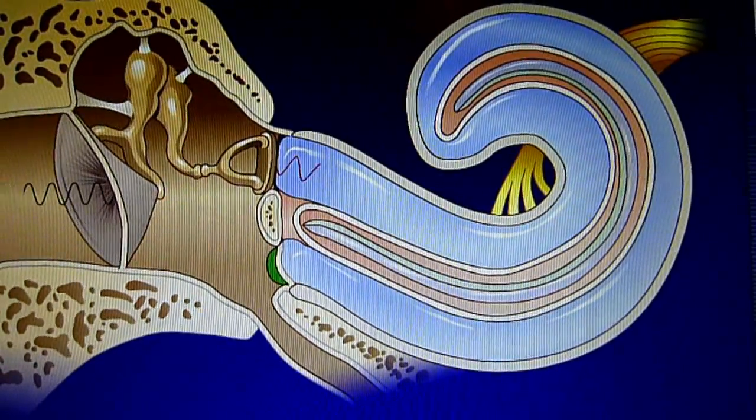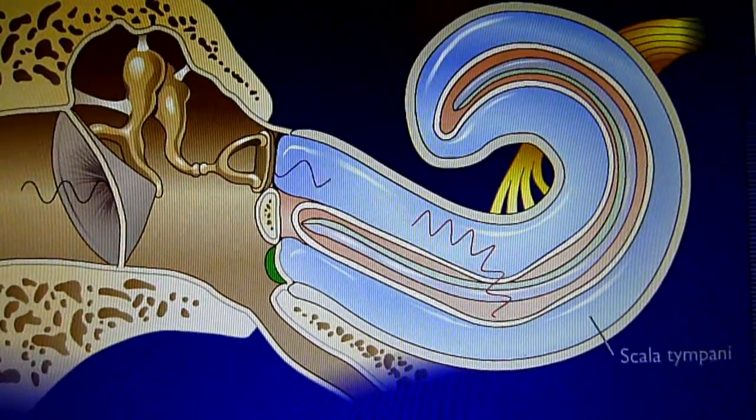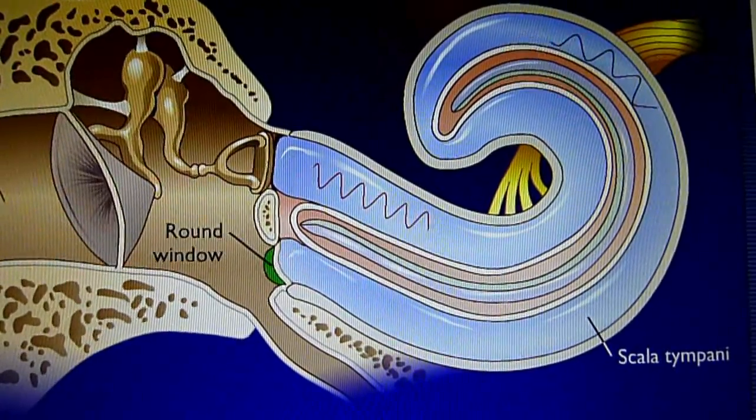When the vibrations reach the perilymph in the scala tympani, they travel to the round window where they are dampened.